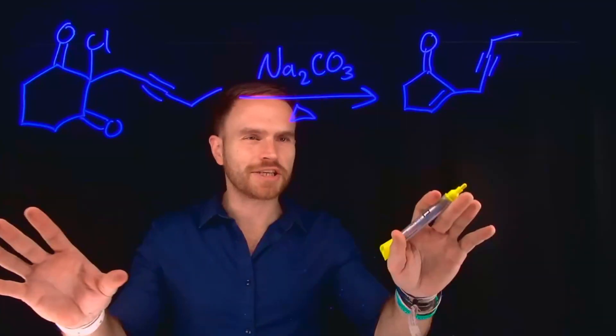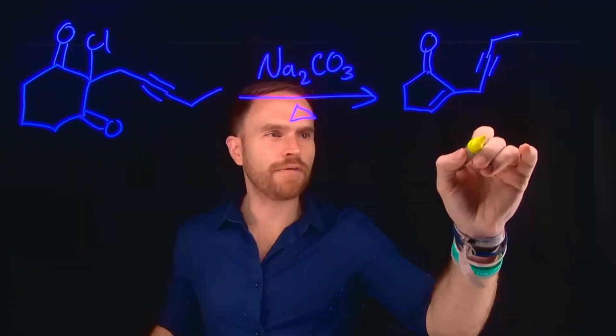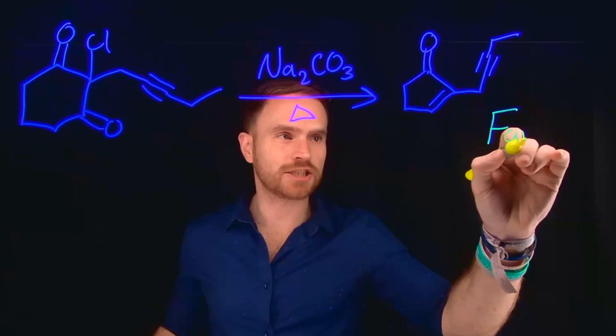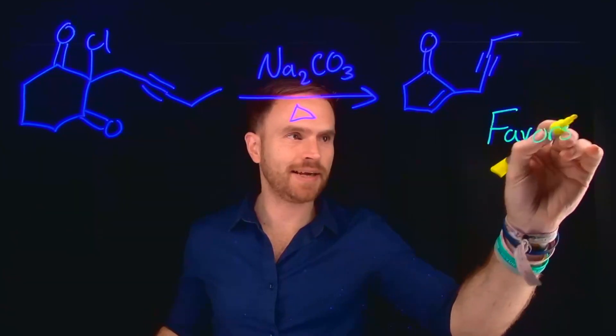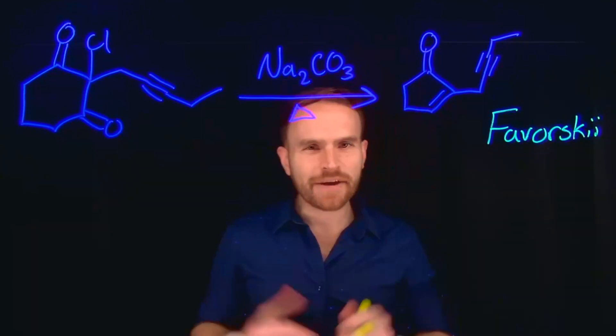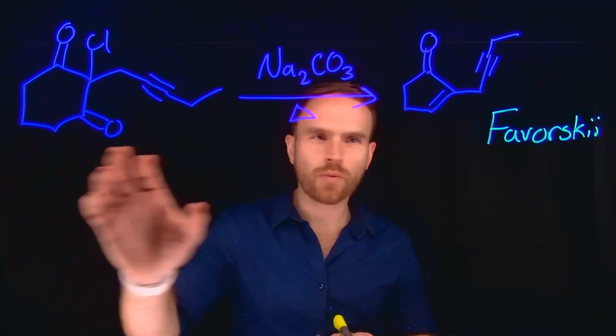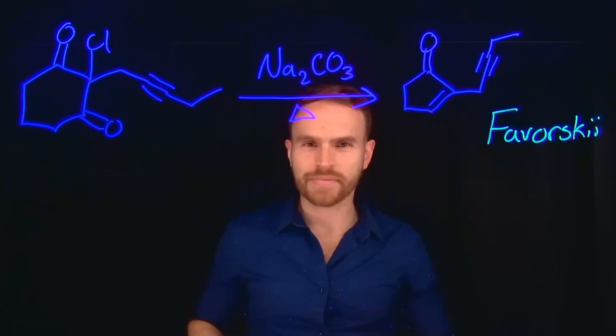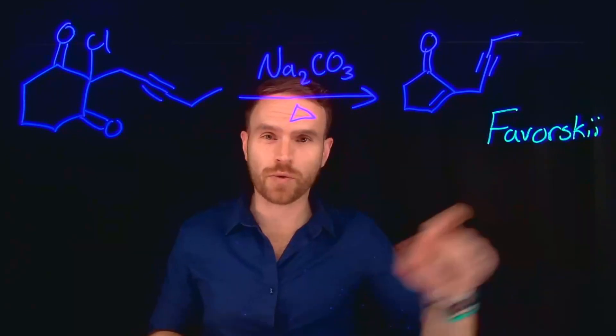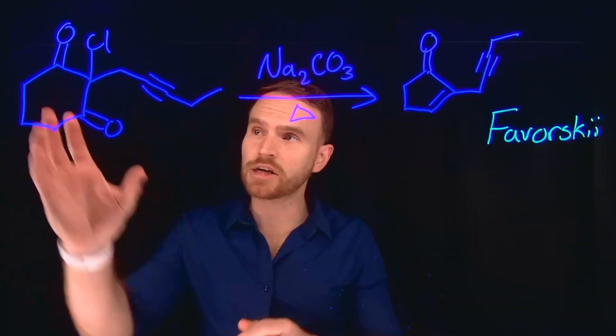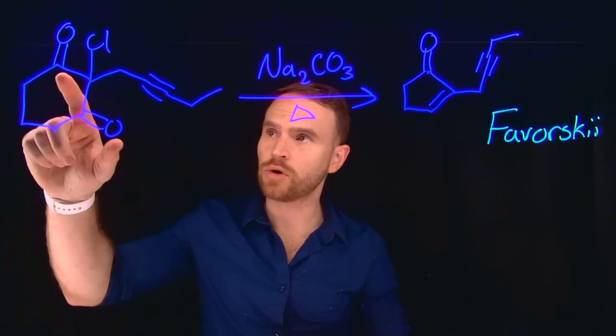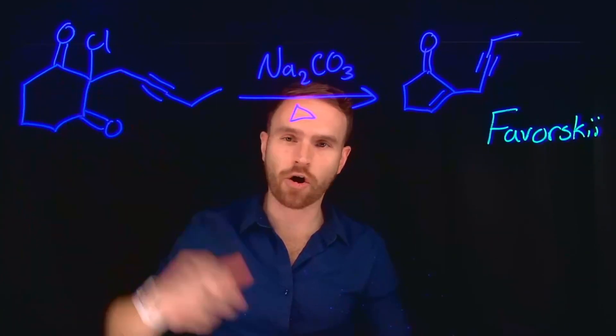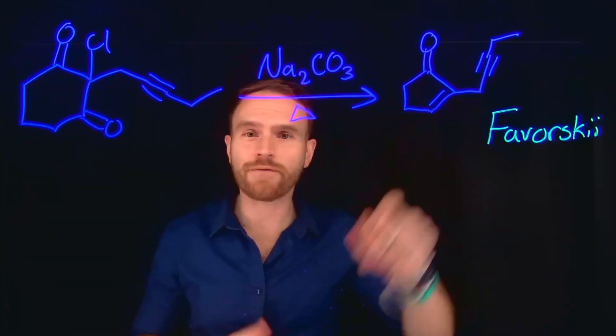This reaction is what's known as an example of a Favorski rearrangement. A Favorski rearrangement is principally a rearrangement of cyclopropanones. An additional feature of Favorski rearrangements is that typically you have a contraction of the ring system. So notice the ring system here is six carbons, but in our product, it's only five.